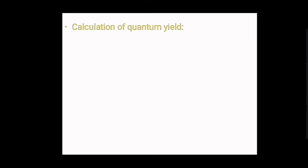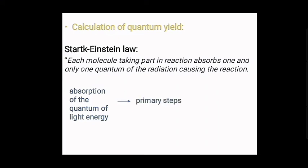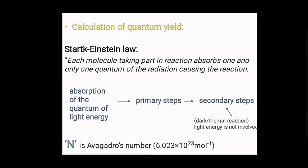Next is the calculation of quantum yield. According to the Stark-Einstein law, each molecule taking part in the photochemical reaction absorbs one and only one quantum of radiation causing the reaction. The absorption of a quantum of light energy results in some primary steps, which are followed by several secondary steps. These secondary steps take place without light energy and are called dark or thermal reactions, as light energy is not involved. According to the Stark-Einstein law, each molecule is activated by only one quantum of light.